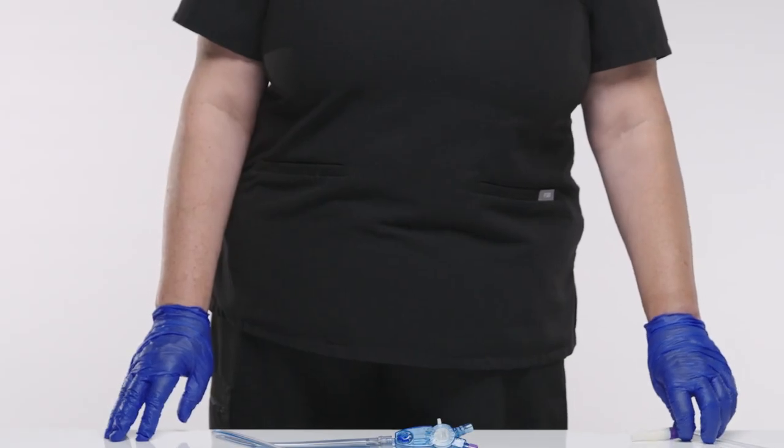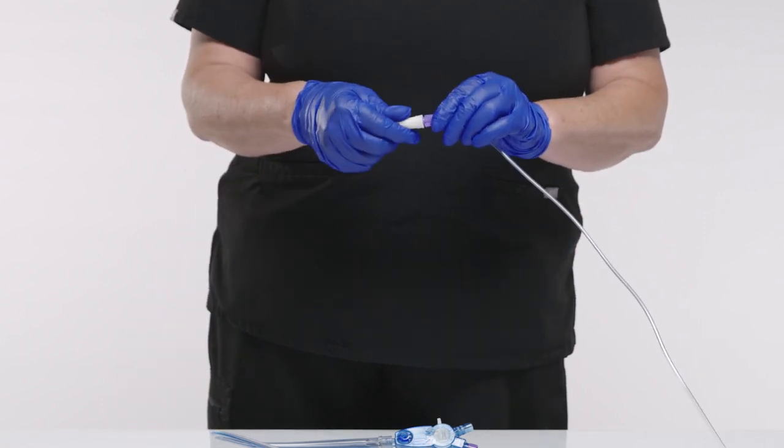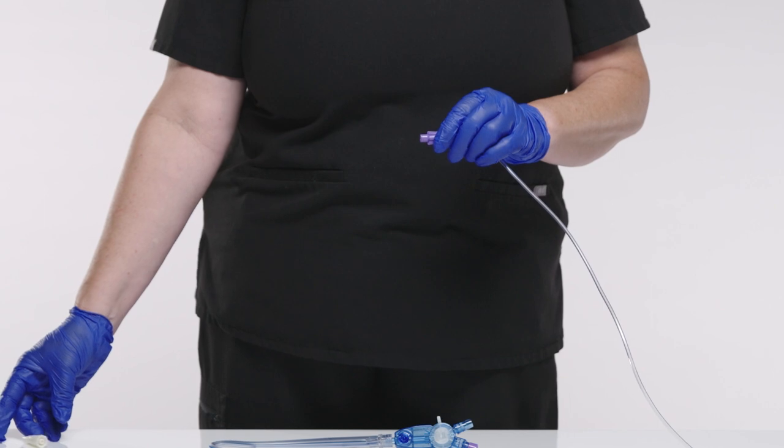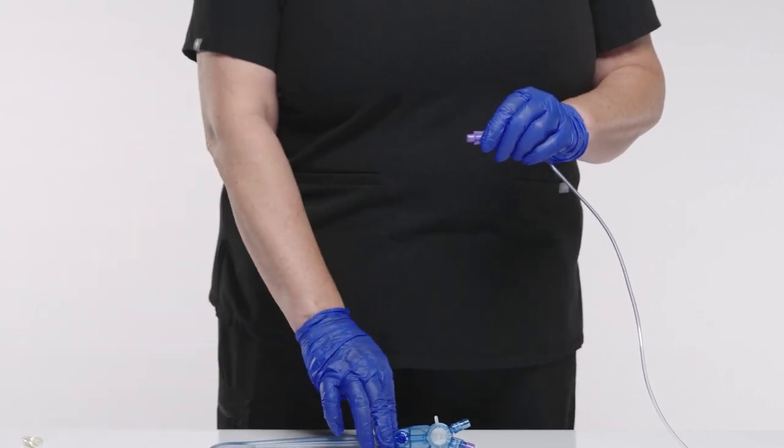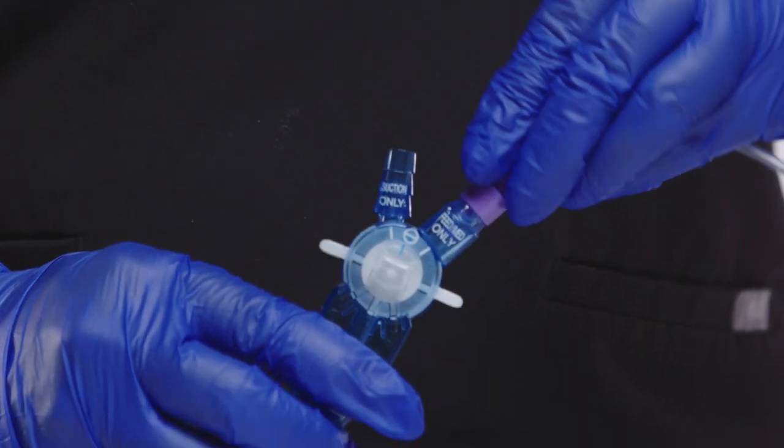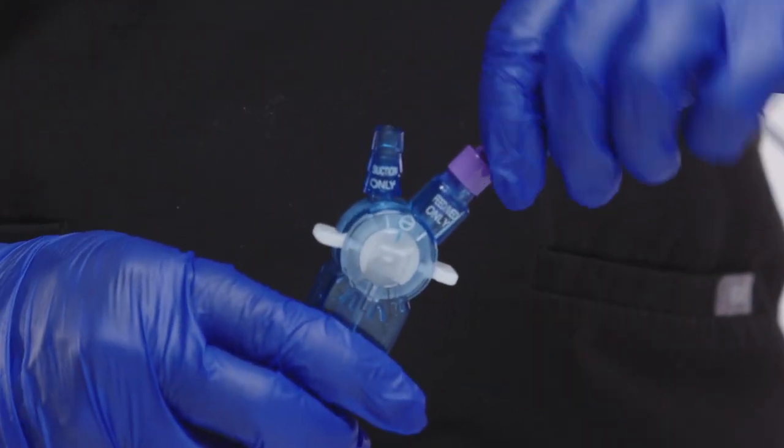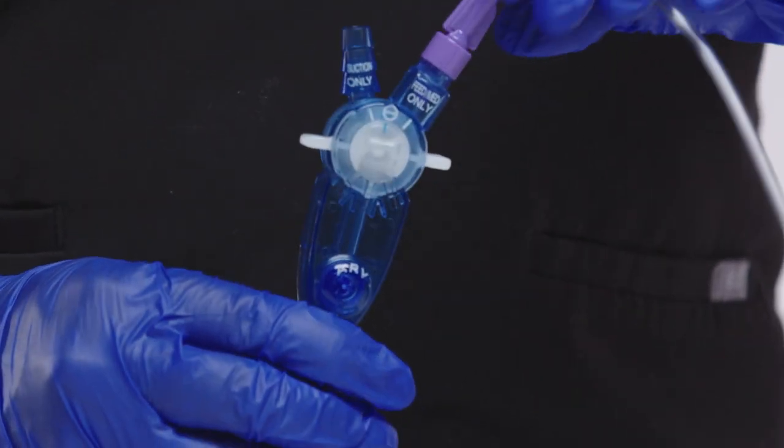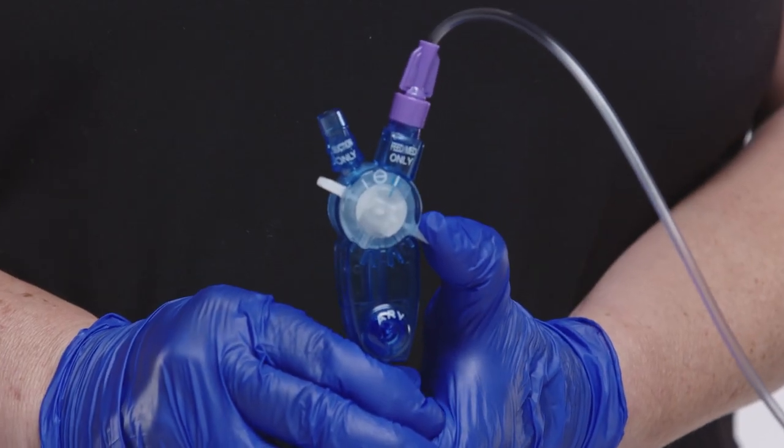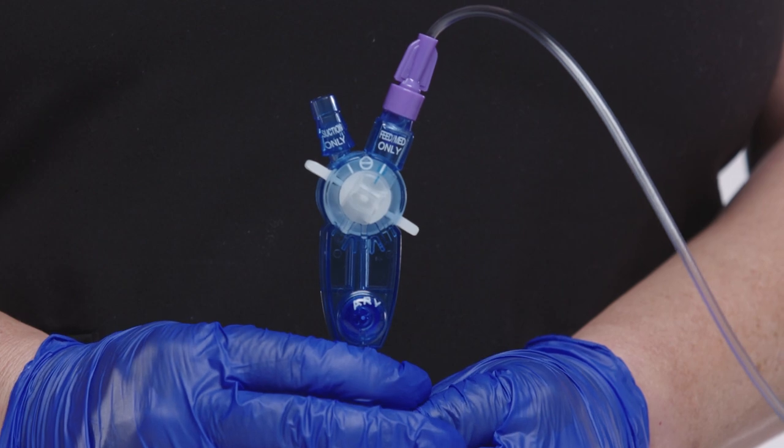If the white transition connector is attached to your feeding set, gently twist to remove the transition connector and discard prior to feeding with an EnFit Connection. Attach the end of the enteral feeding bag to the feeding port. Make a quarter turn and do not over tighten the connection. Turn the selection knob until the indicator line on the knob is aligned with the indicator of the feed port and begin feeding.